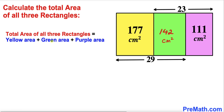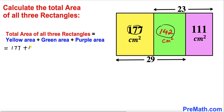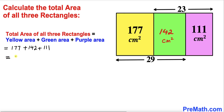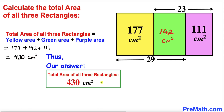Now for the final step: the total area of all three rectangles is the sum of the yellow, green, and purple rectangles — that is 177 plus 142 plus 111, which gives us 430 centimeter square. Thus the total area turns out to be 430 centimeter square. Thanks for watching, and please don't forget to subscribe for more exciting videos.